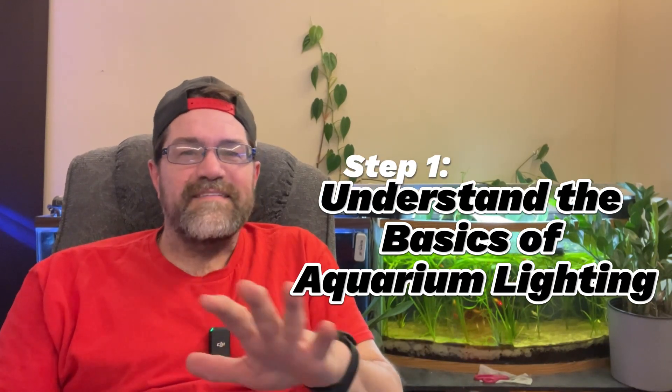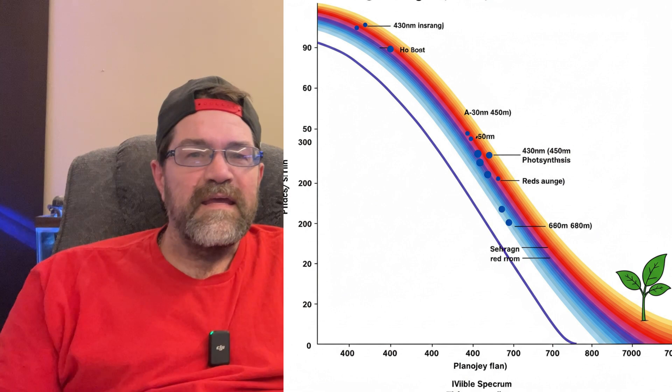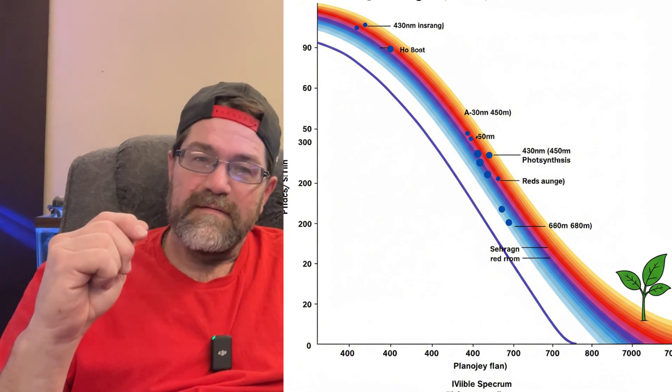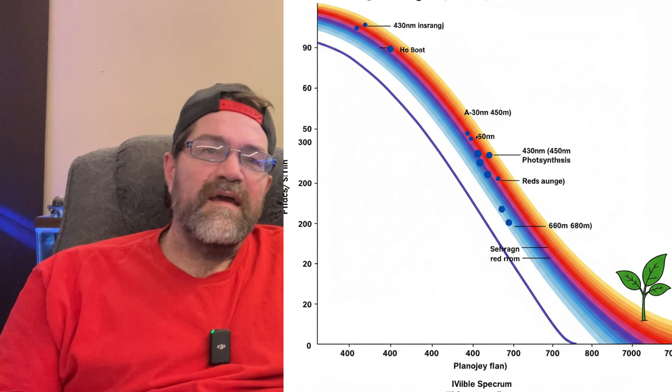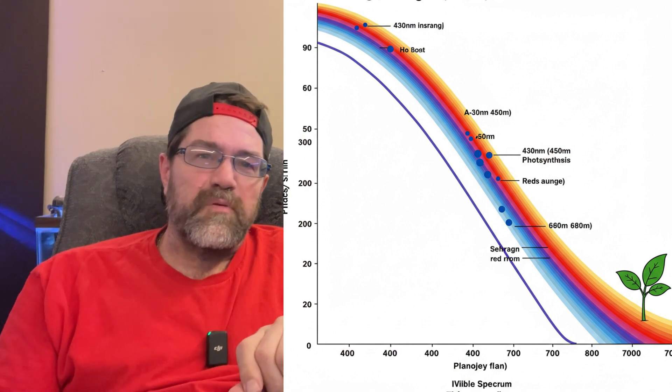And then there's the technical jargon — PAR, Kelvin, spectrum. What does it all mean? Let me break it down step by step so you can finally get it right. Light is energy, and your plants need it to grow. But not all light is created equal. What your plants actually need is a specific range of light called the photosynthetically active radiation, or PAR spectrum. This is light in the 400 to 700 nanometer range — the wavelengths plants use for photosynthesis. Many budget aquarium lights don't provide enough PAR, or they focus on the wrong part of the spectrum.